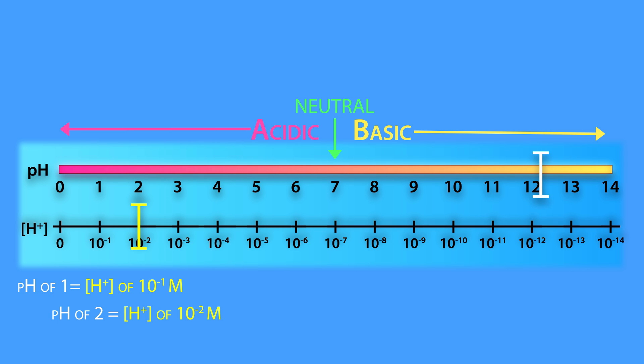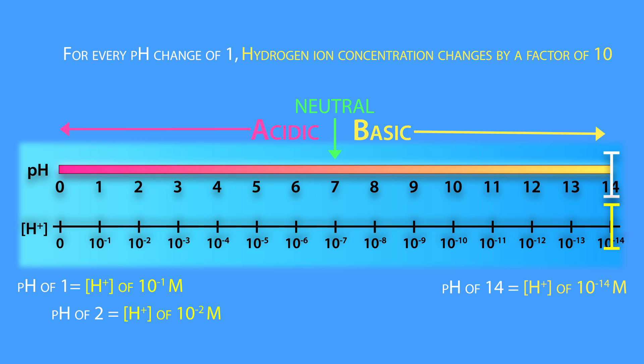And a pH of 14 equals a hydrogen ion concentration of 10 to the minus 14 molar. The important thing to remember is that for every change in pH of 1, the hydrogen ion concentration changes by a factor of 10.